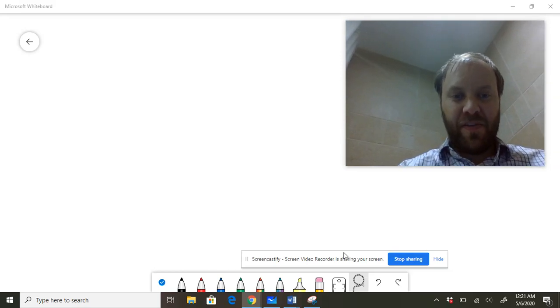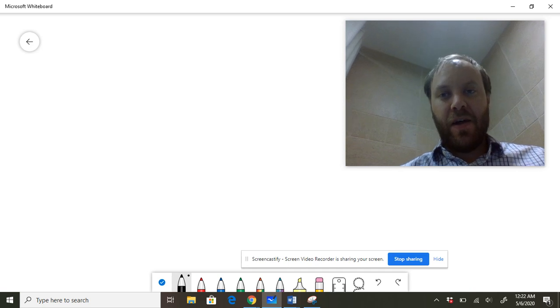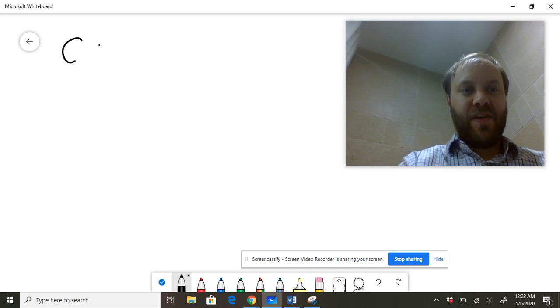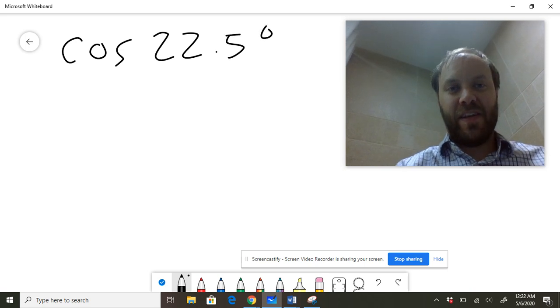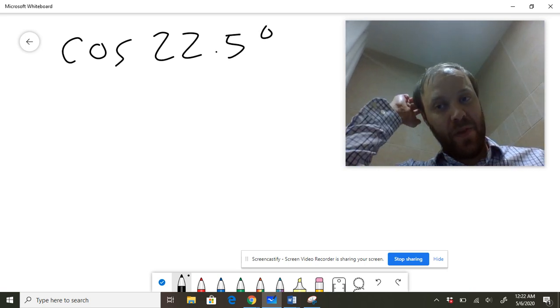All right, I believe we're taking a look at number 15 on 7.7, and this is asking us to find the cosine of 22.5 degrees. If you're wondering about the significance, that's half of 45.